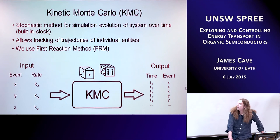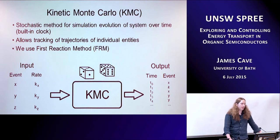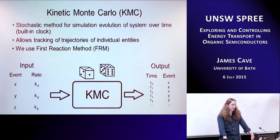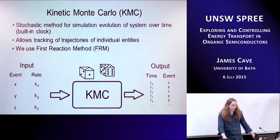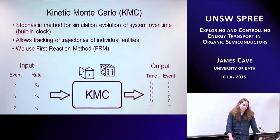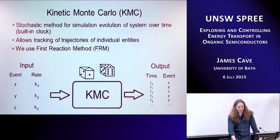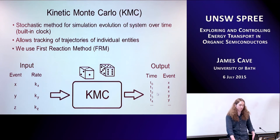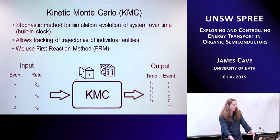So we wanted to model that using Kinetic Monte Carlo (KMC). We use random numbers to give us a possible way the system could evolve over time. The important thing is the built-in clock, so you can track what each entity — in our case, excitons — is doing over time. KMC is run many times to give a statistically correct picture of system evolution. You provide all the possible events and their rates, generate random numbers, and get a list of what happened at each time step. We're using the First Reaction Method.